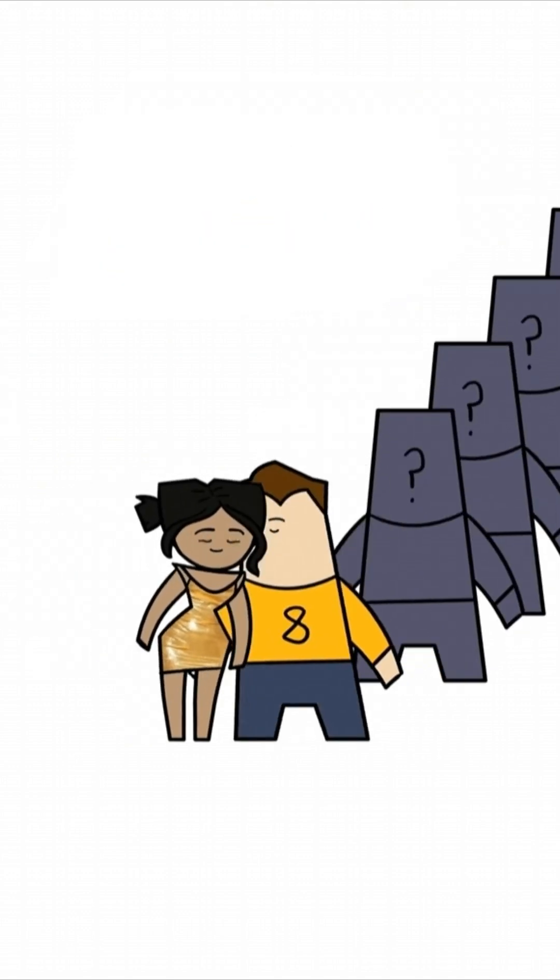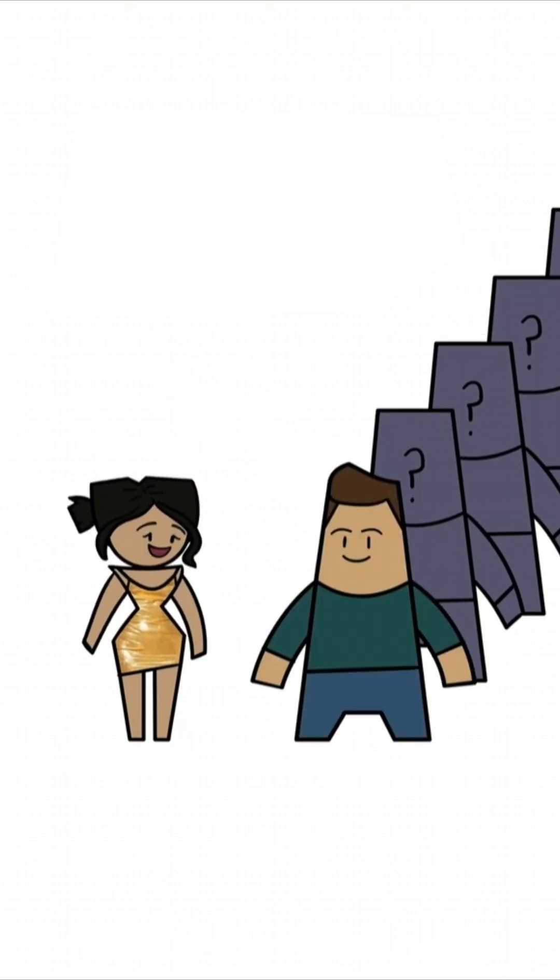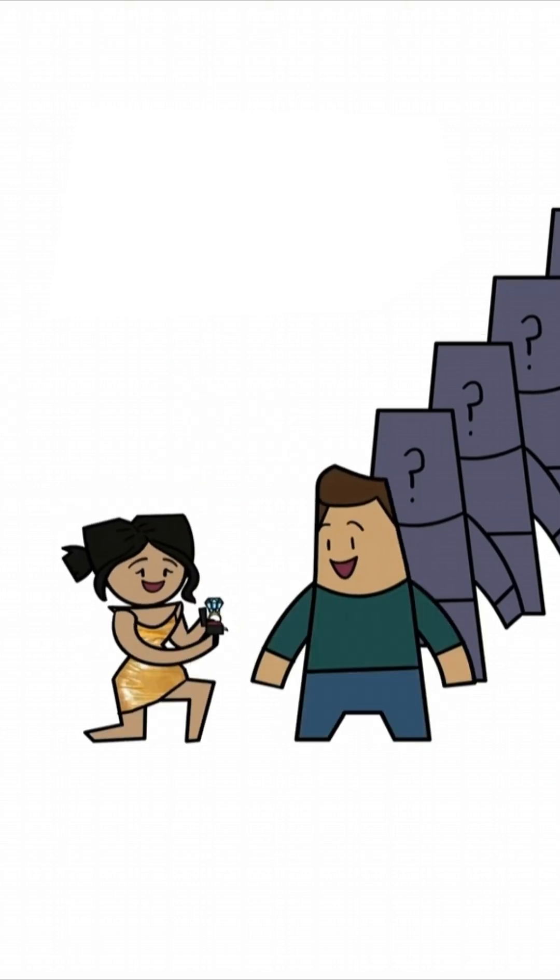Then, starting with person number 8, you marry the first one who's better and makes you forget your old favorite.